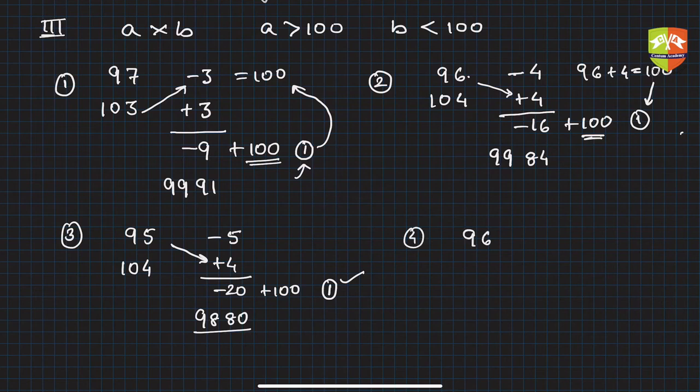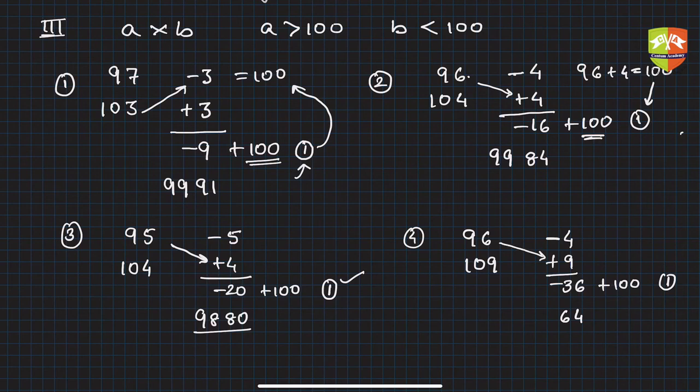Next: 96 into 109. Here minus 4, here plus 9. 9 times 4 is minus 36. Add 100 to make it positive—you'll get 64. This 1 has to be counted here. Now 96 plus 9, or 109 minus 4, whichever you choose. 109 minus 4 is 105, then take away this 1: 105 minus 1 is 104. The product is 10464.